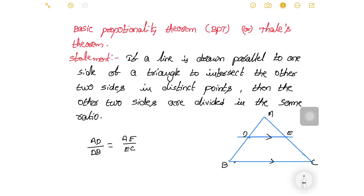So we have AD/DB = AE/EC. This is what we need to prove.